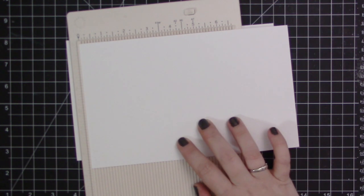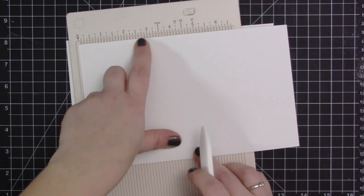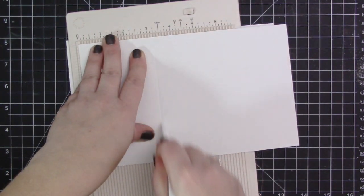To start off I have two separate pieces of white card stock and they are both five and a half inches tall. I'm just going to go ahead and do some score lines to create my card.